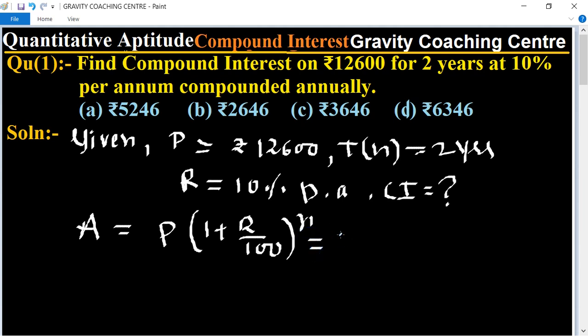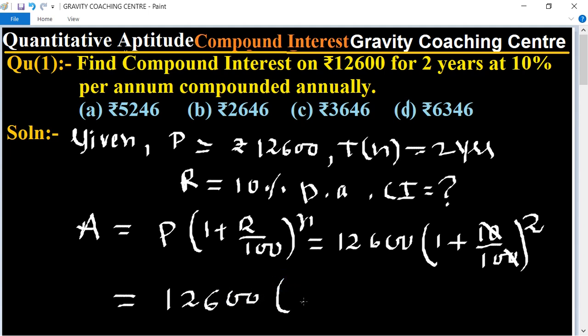And one plus rate of interest equal to 10 upon 100 and time equal to two years. Zero zero cancel equal to 12,600 and this one will be 11 upon 10 after LCM.